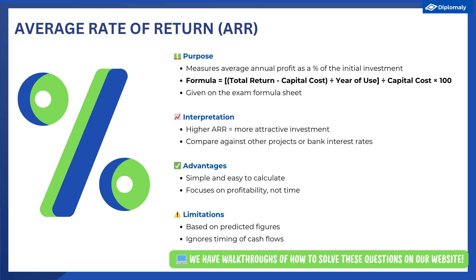The second investment appraisal technique is the average rate of return, or ARR. The ARR looks at the average annual profit of an investment expressed as a percentage of the initial amount invested. It is calculated as average annual profit divided by the initial investment. We recommend splitting out the formula as shown on screen so you can more easily plug in numbers from the case and decrease the chance of mistakes. The ARR formula is provided on your final exam and on your teacher's formula sheet.